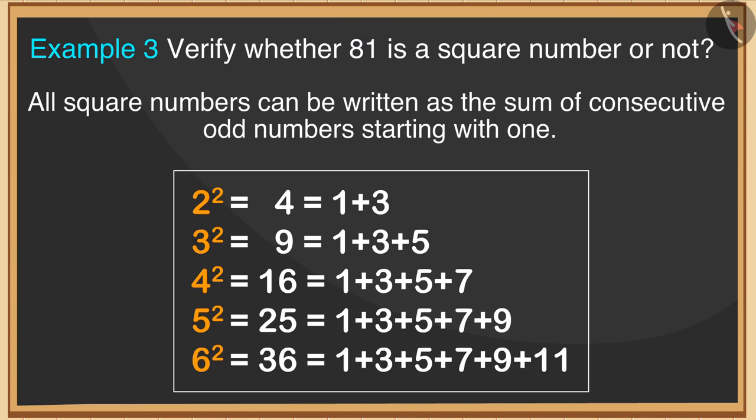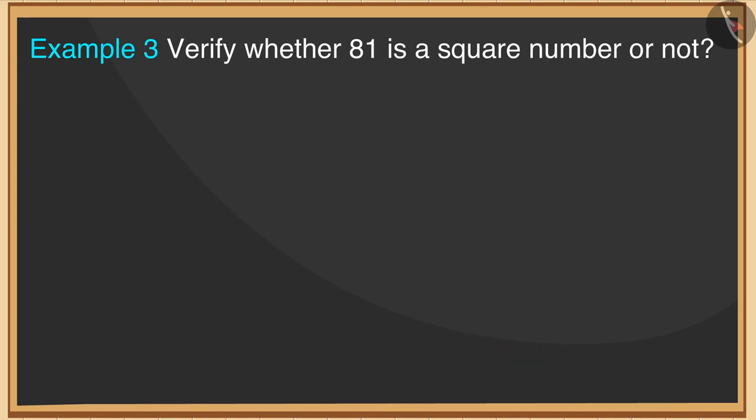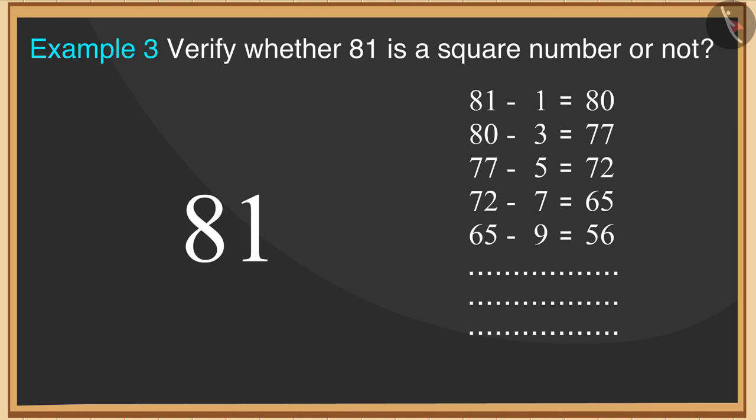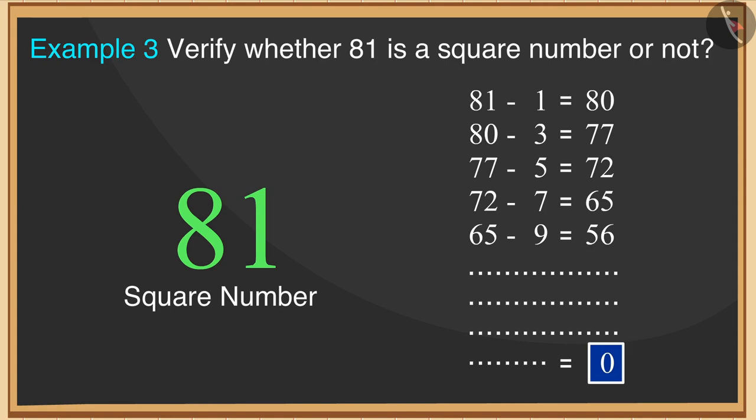So, we will subtract consecutive odd numbers from the number 81 in their order. If in the end the result is 0, then this number will be a square number.